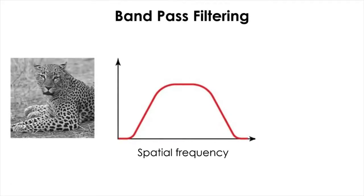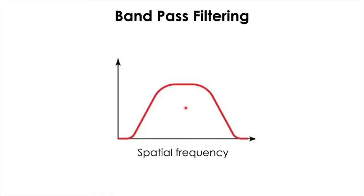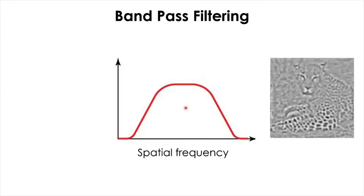We can also make a filter so that only middle spatial frequency information passes through, while both low and high spatial frequency information are filtered out. This kind of filter is known as a band-pass filter. The resulting image is still somewhat blurry, but the overall shape of the cat and the dot pattern become clearer than before and start to be distinguished from the background.